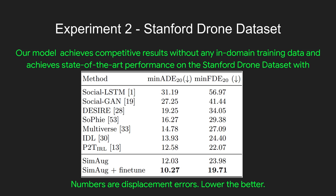Experiment two is on the Stanford Drone dataset. Our model achieves competitive results without any in-domain training data, as you can see in the second-to-bottom row, and achieves state-of-the-art performance on the Stanford Drone dataset with fine-tuning.